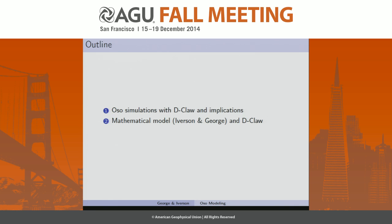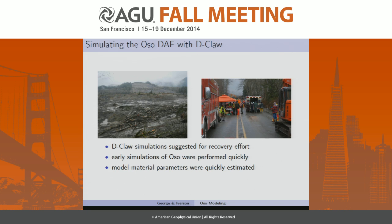For full details, you should consult the papers that we just published. So a few days after the OSO event, it was suggested that D-CLAW simulations might actually be useful in the recovery effort — the idea was that they might provide maps for the recovery workers, mostly to give them an indication of how far houses might have been transported by the flow, so that they would have a better idea of where to look.